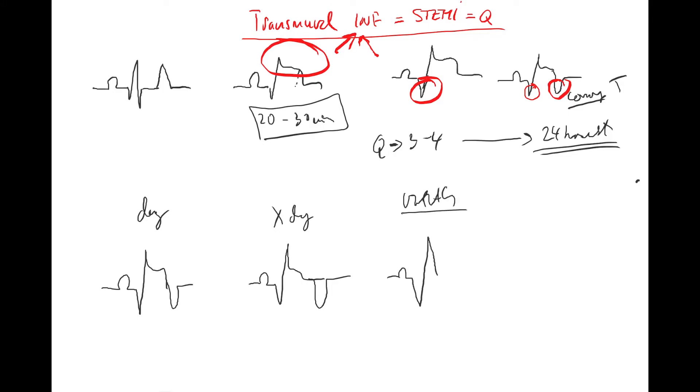...deep Q and ST could be already normal, but there's still negative T. And years - the Q is the only thing typically which really lasts long. Pathological Q is a really long-term sign. After one year, if someone has a pathological Q there, you can say, 'Oh, you had an infarction.'